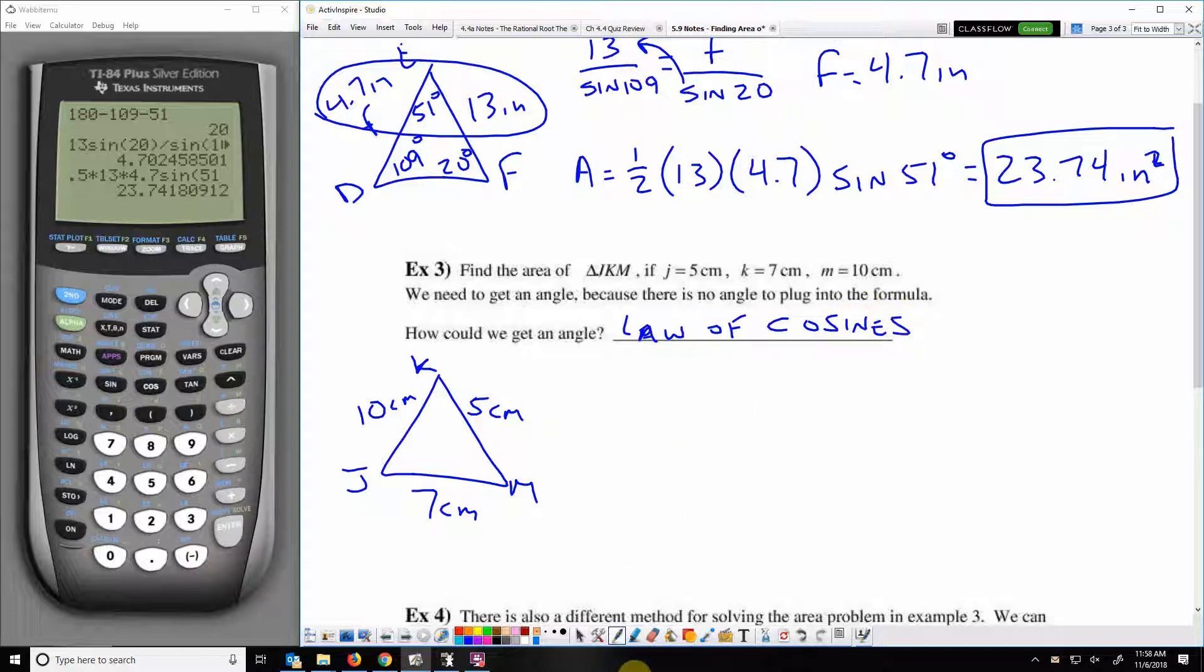I can pick whichever angle I want. I'm going to go for angle J. To find angle J using law of cosines, I've got 5 squared equals 10 squared plus 7 squared minus 2 times 10 times 7 cosine J. I'm going to do some simplifying. I've got 25 equals 100 plus 49 minus 2 times 10 times 7. 10 times 7 is 70, times 2 is 140. So minus 140 cosine J.